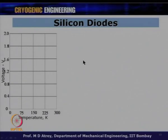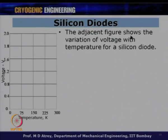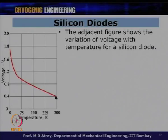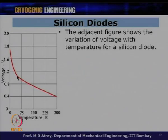The adjacent figure shows the variation of voltage with temperature for a silicon diode, with voltage on the y-axis and temperature on the x-axis. Unlike PT100 where voltage decreased with decreasing temperature, in silicon diodes voltage increases as temperature decreases — so sensitivity is negative. The response is linear up to about 50 Kelvin, and there is also good linear variation below 50 Kelvin, enabling a good calibration curve.